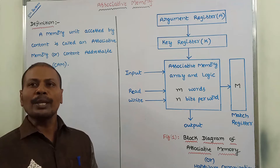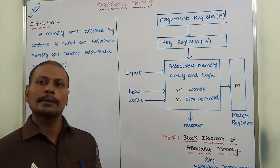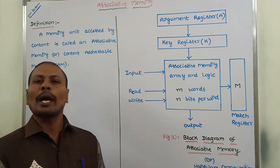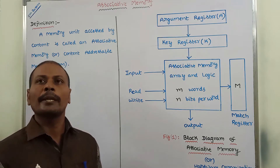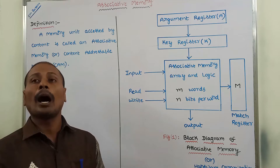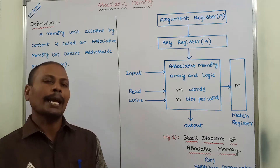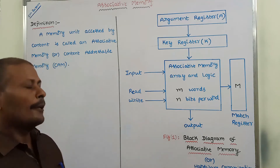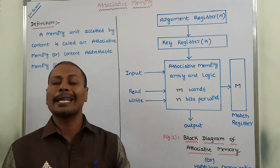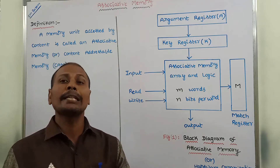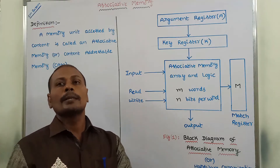Generally, CPU executes the instruction based on the address. That means, suppose we want to execute a particular instruction that is stored in the memory — first it accesses the address of that instruction, and after that it executes that instruction. But in the case of associative memory, the CPU executes the instruction based on the content available in the instruction, not by an address.